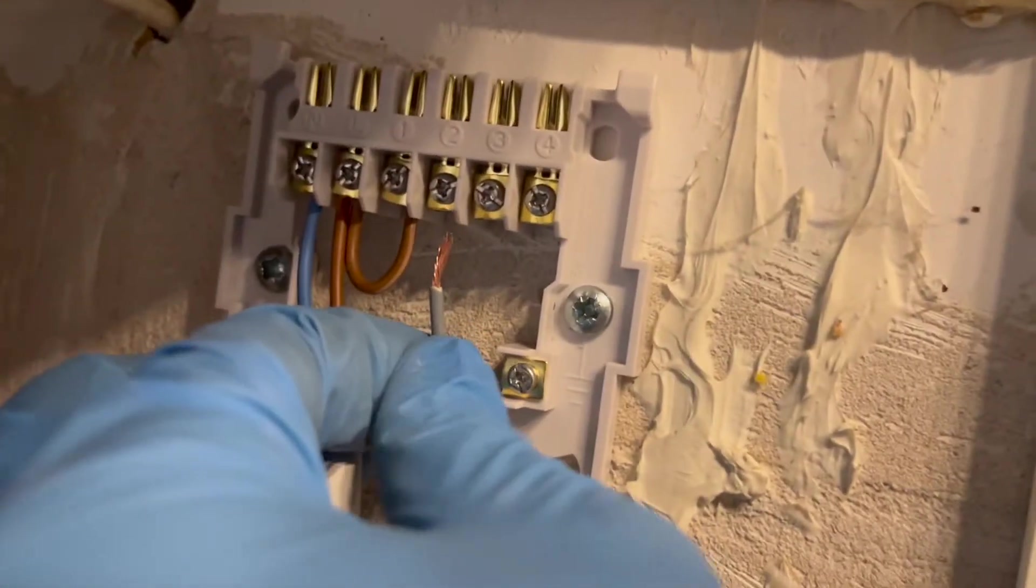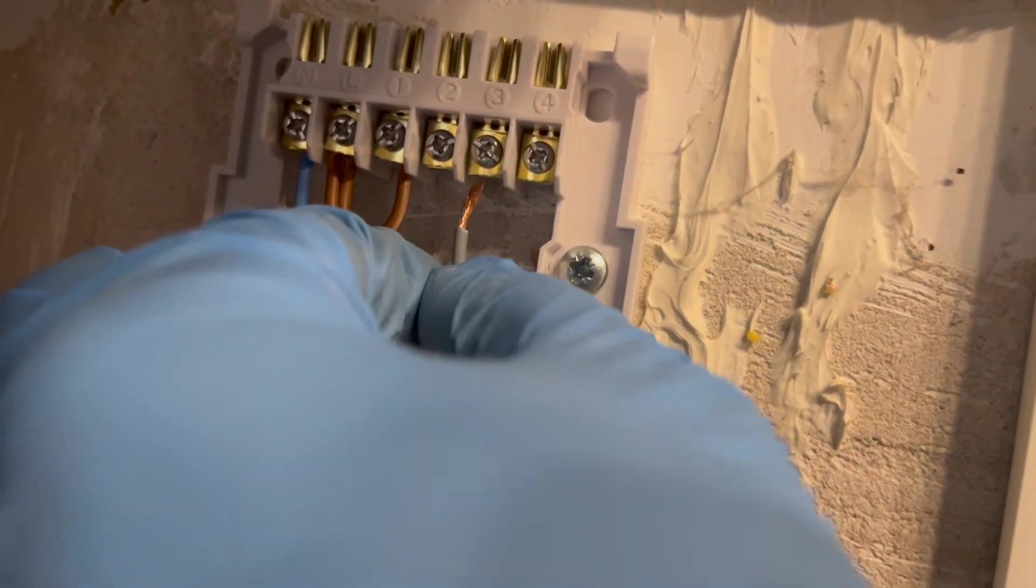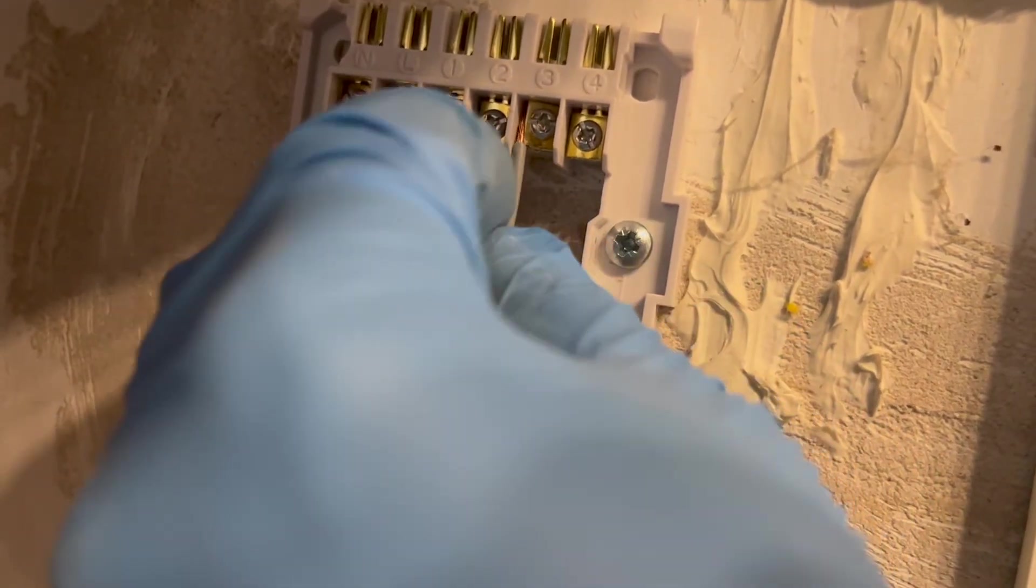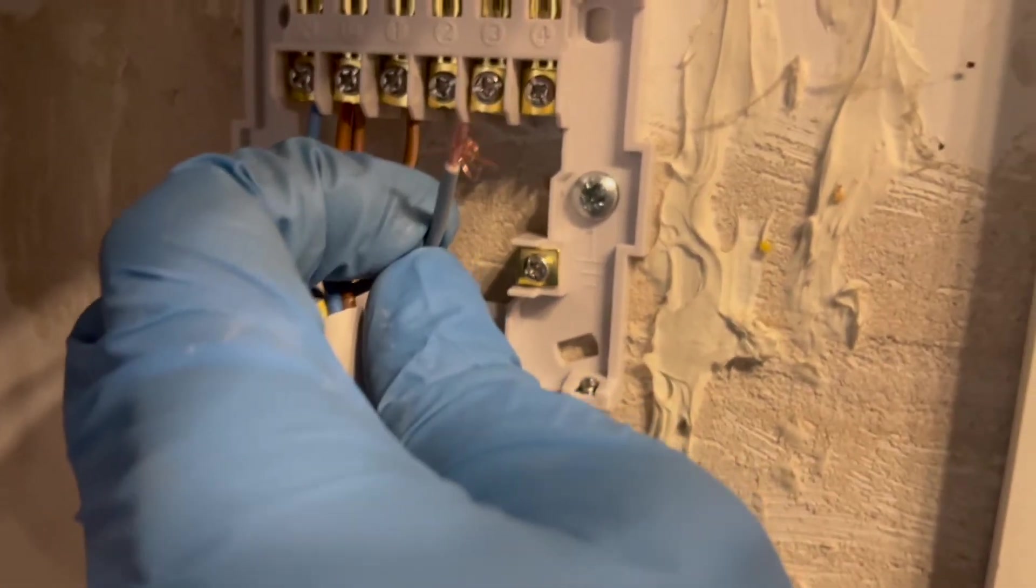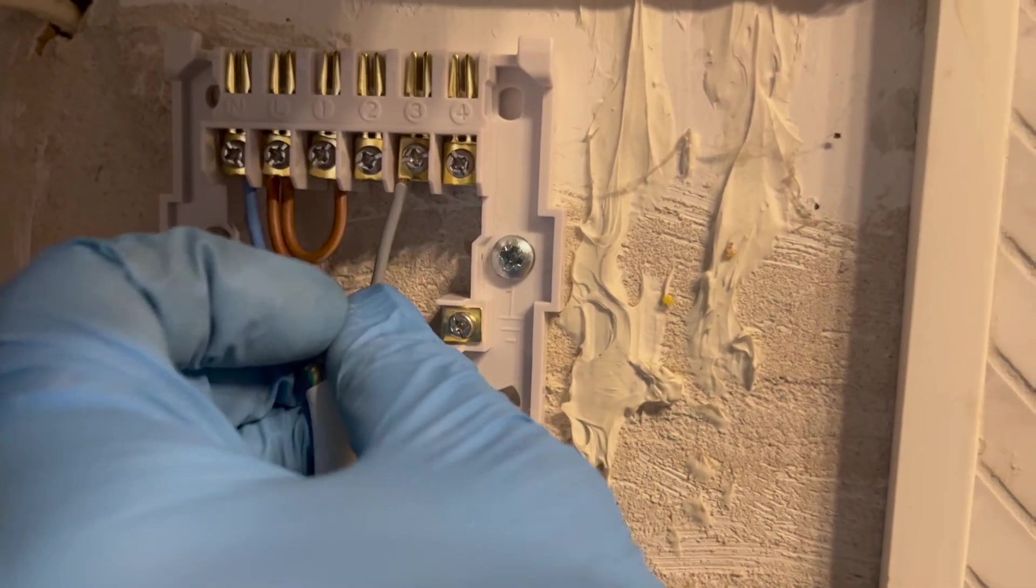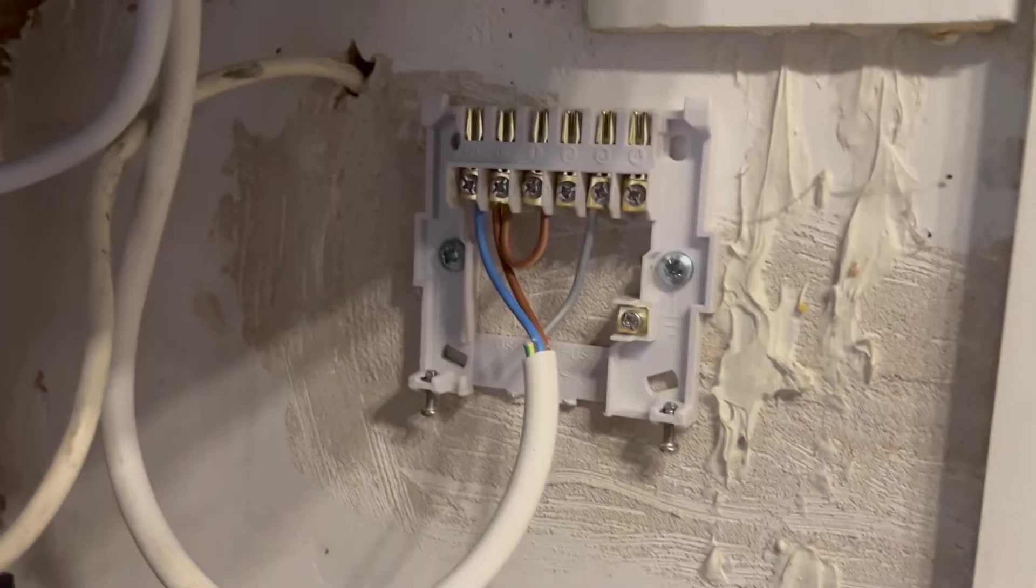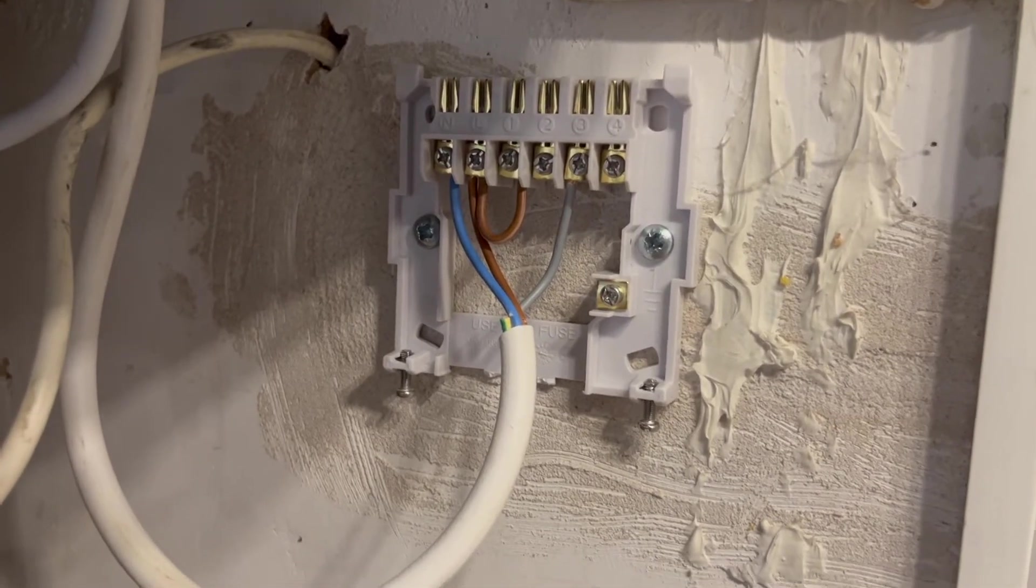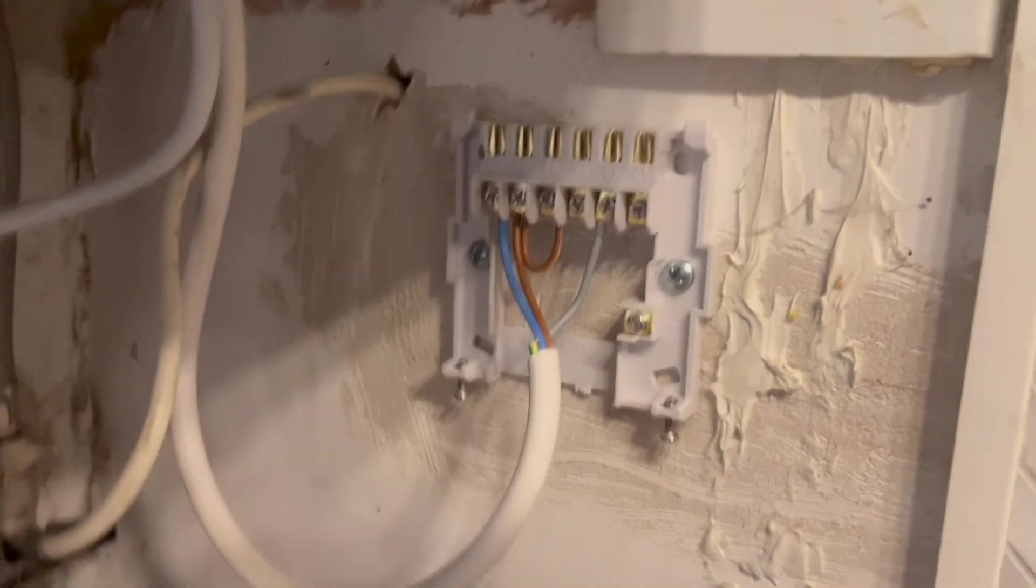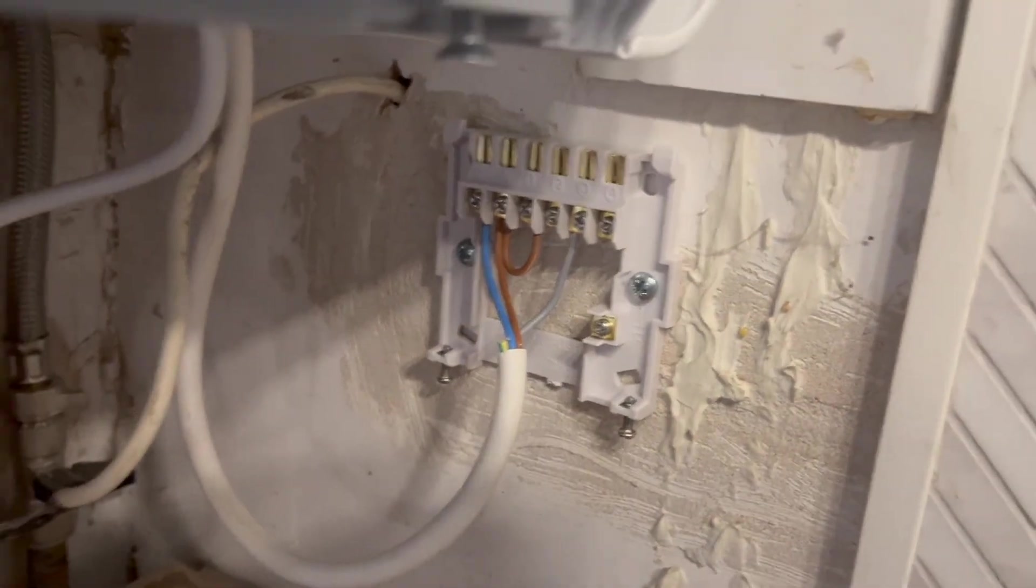Now we just have to do number three. You can see I didn't twist it properly, so it's not going in. I'm going to re-twist it, put it in, and this time it's fine. Just gotta tighten it up again. That's it, that is all the wiring done. Give it a pull, make sure they're definitely not coming out, and then you can actually put the receiver onto that base now.